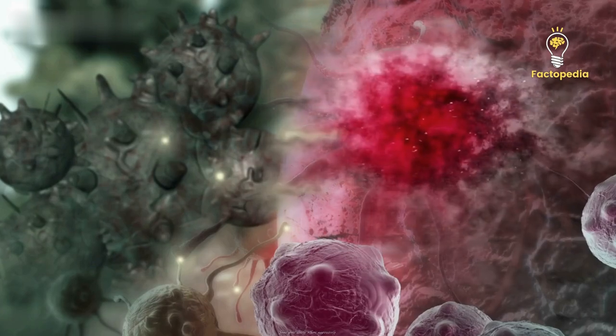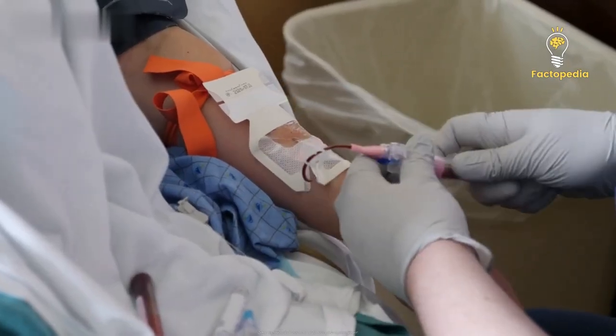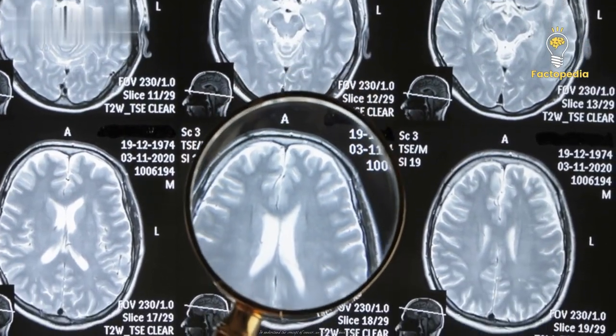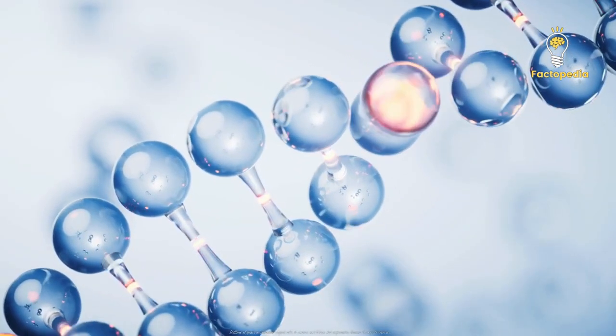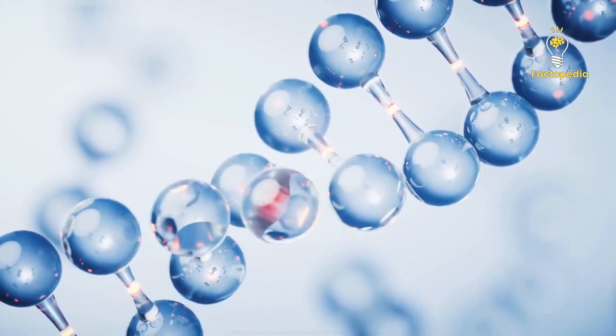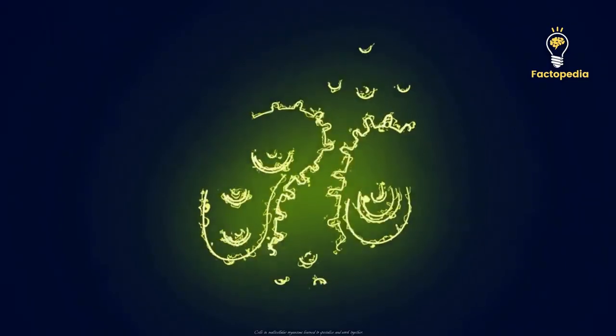Some grow slowly, others aggressively. Some respond well to treatment, while others pose a grave danger. To understand the concept of cancer, we must travel back in time. Billions of years of evolution shaped cells to survive and thrive, but cooperation became the key to success. Cells in multicellular organisms learned to specialize and work together.